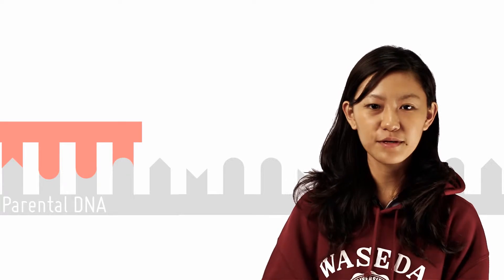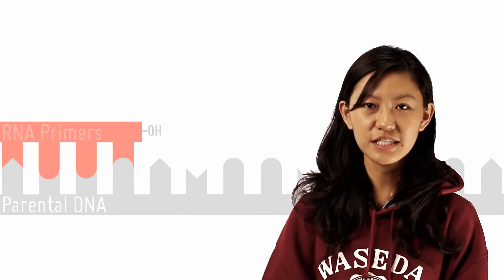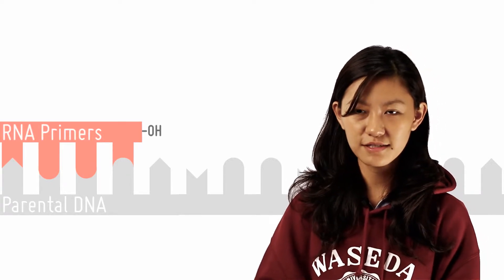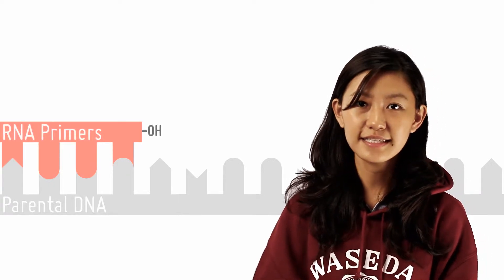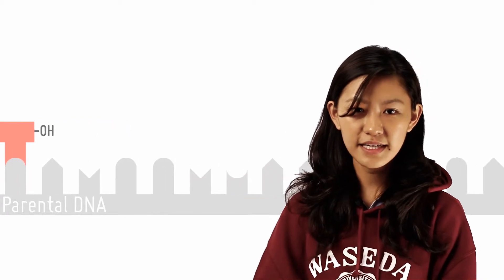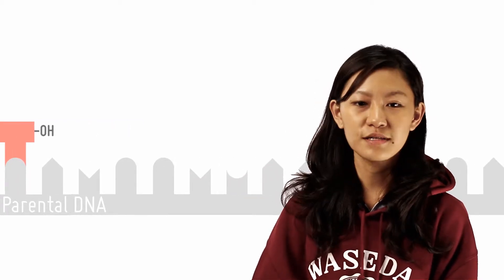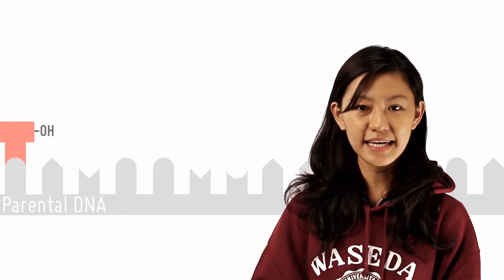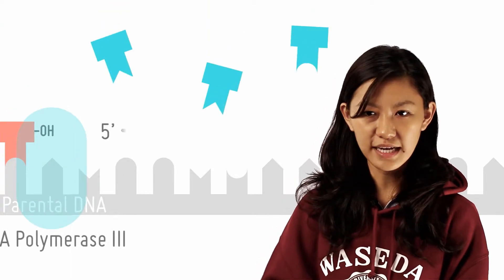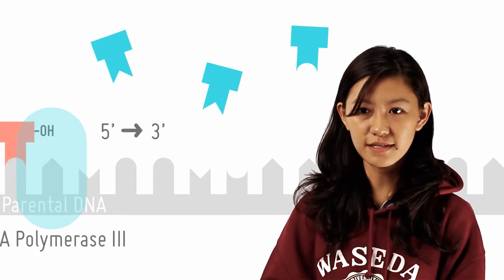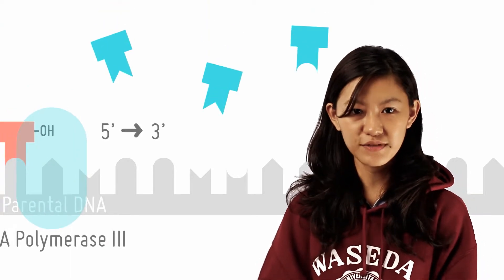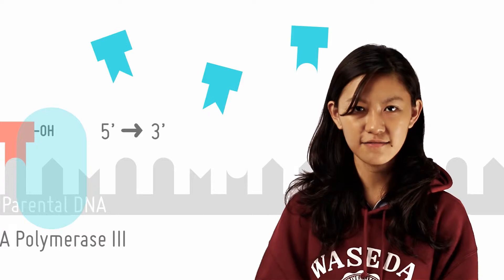The RNA primer provides a free 3' OH end required for DNA polymerase to initiate DNA synthesis. DNA polymerase adds dNTPs, catalyzes the formation of phosphodiester bonds between dNTPs, and proofreads previously replicated regions.